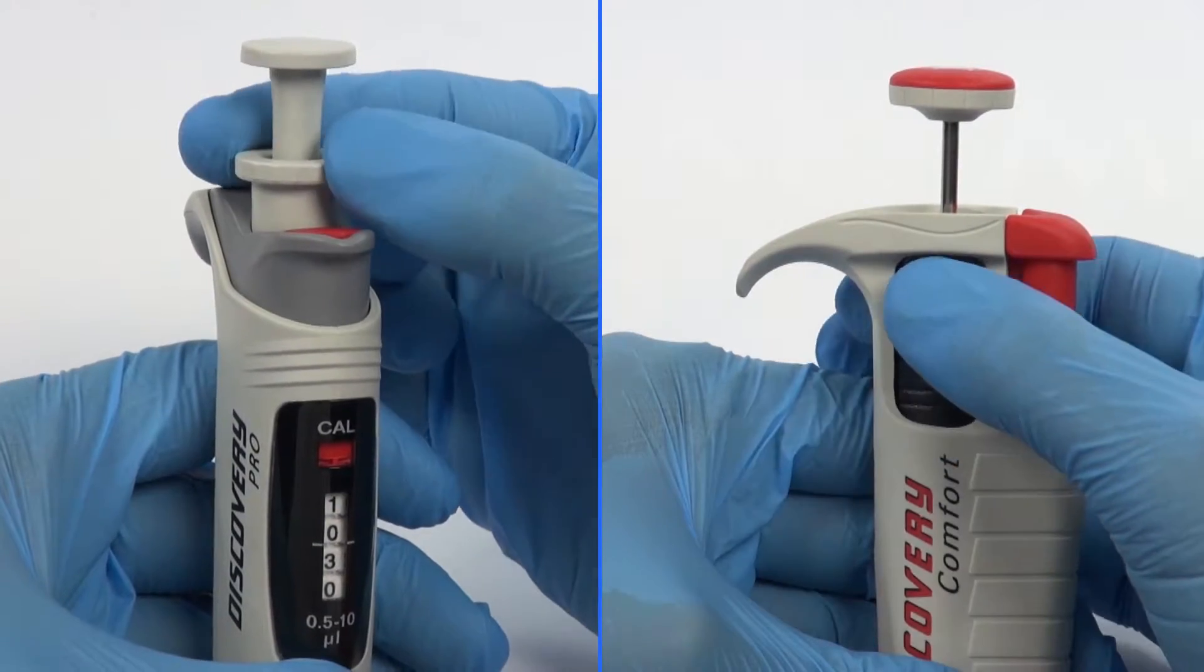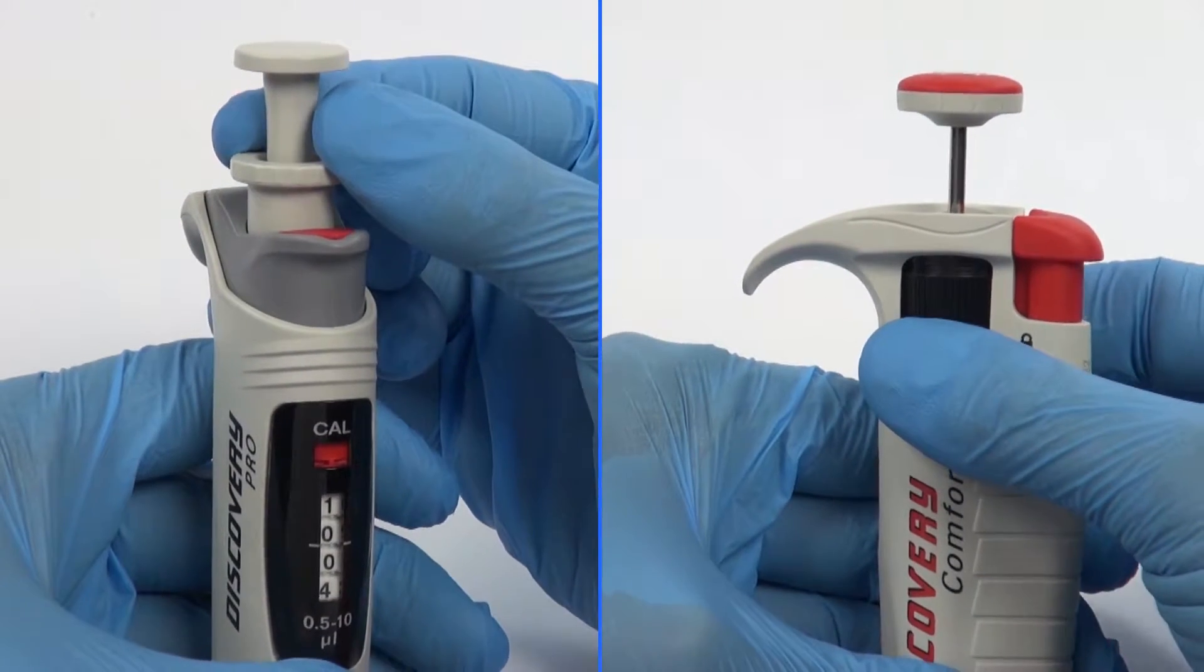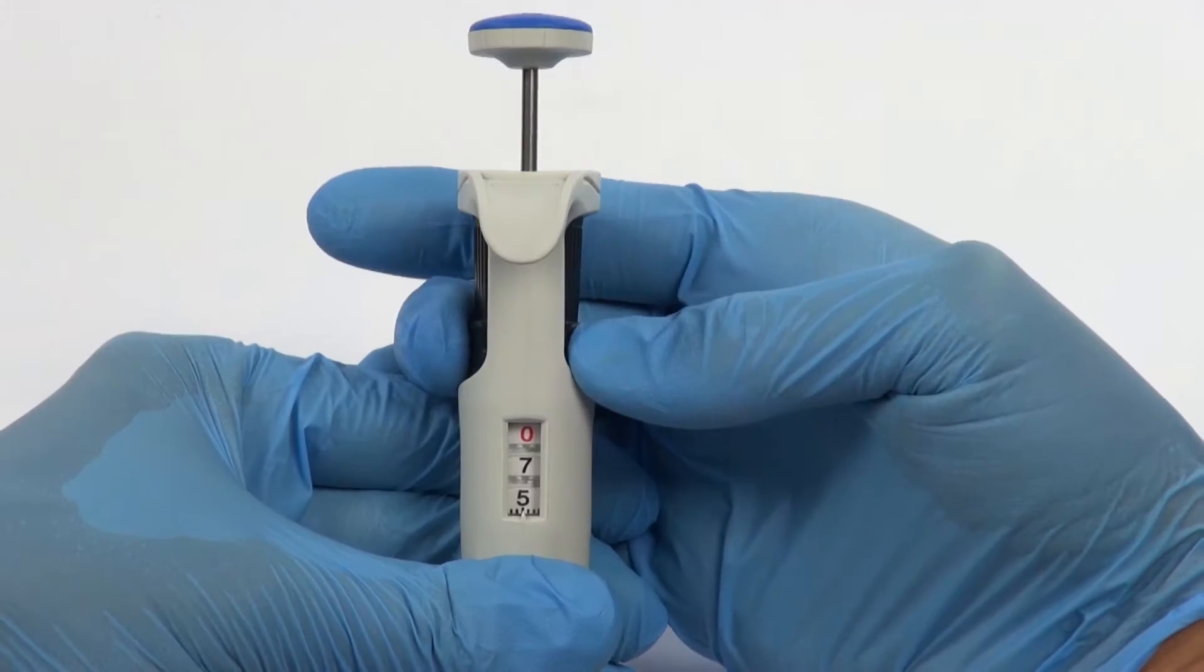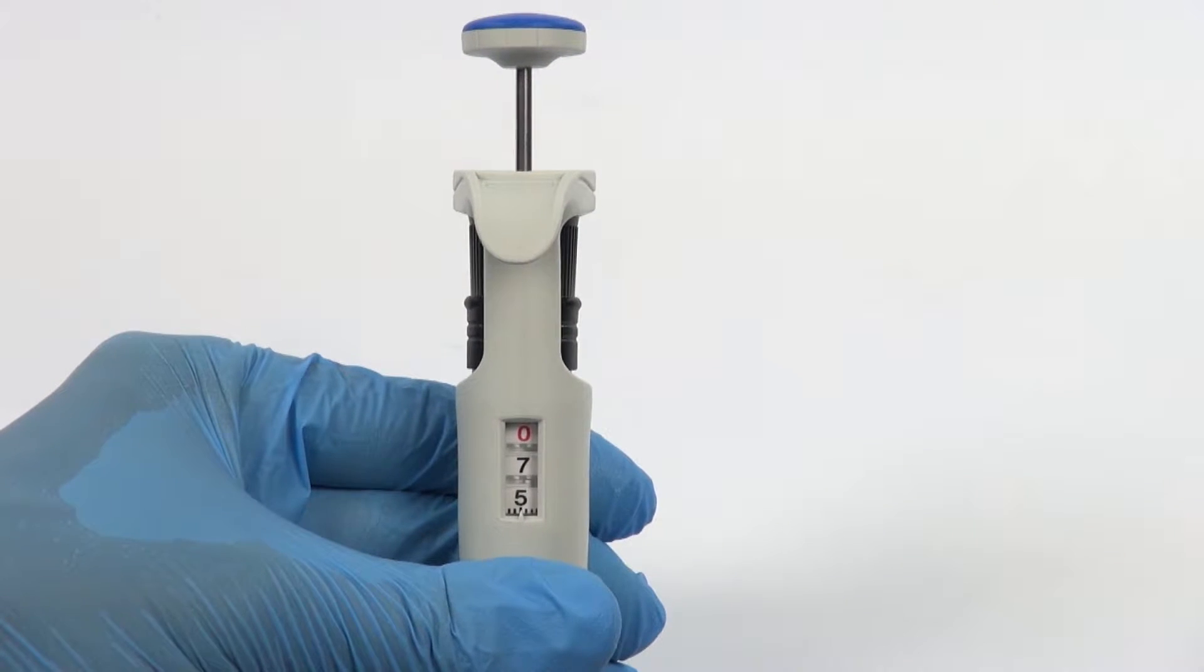Additionally, Discovery Comfort and Discovery Pro pipettes are equipped with a volume lock mechanism. The volume shown on the counter is represented by three or four digits, which should be read from top to bottom.